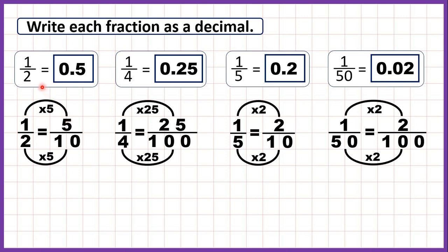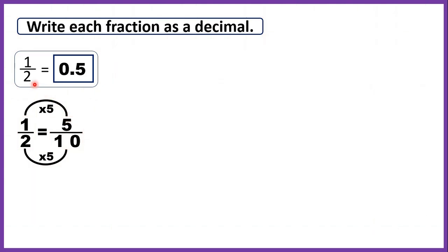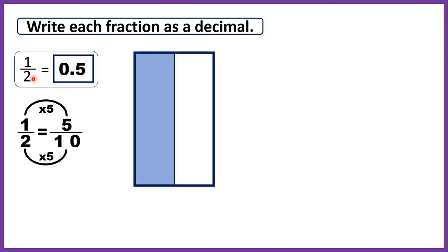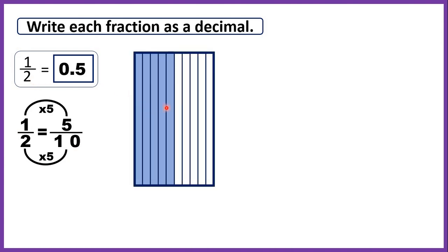Let's review. We had one half, which we changed to five tenths so we could write it as 0.5. You can see exactly the same amount of the fraction bar or rectangle is shaded — we just changed it into tenths because tenths have a decimal place value.